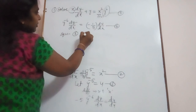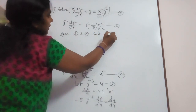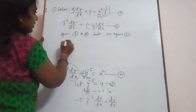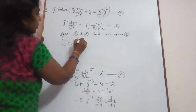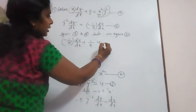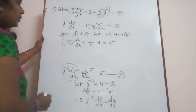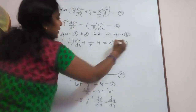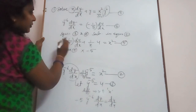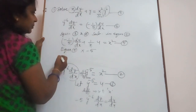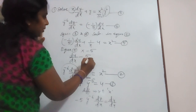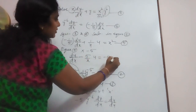Substituting equations 3 and 4 into equation 2: y power minus 6 dy/dx equals minus 1 over 5 du/dx, plus 1/x into y power minus 5 which is u, equals x square. This is equation 5. Multiplying equation 5 by minus 5: du/dx minus 5/x into u equals minus 5 x square. This is equation 6, a linear differential equation.